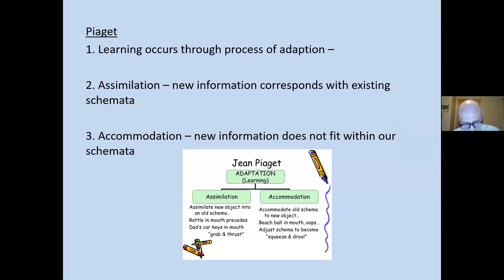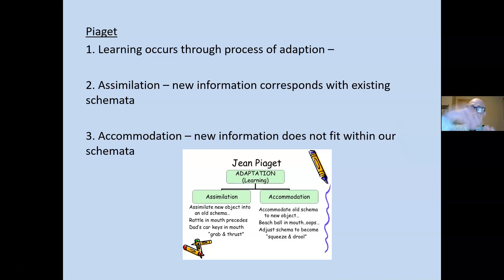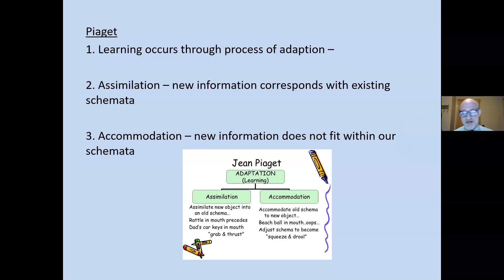Piaget says that learning occurs through the process of adaptation — a natural tendency to adjust to one's environment using assimilation and accommodation. Assimilation is when new information corresponds with existing schemata: the file folder contains it, and I can simply add a little more to that frog file folder. Accommodation is when new information does not fit with our existing schemata — we have to either create a new file folder, expand existing ones, or completely rearrange our file folders.